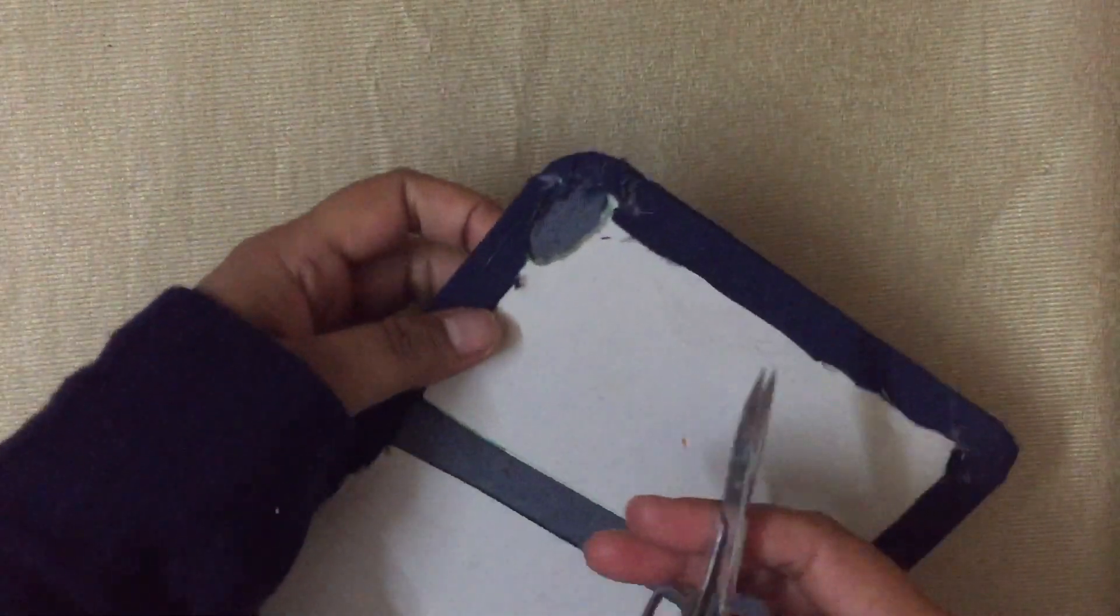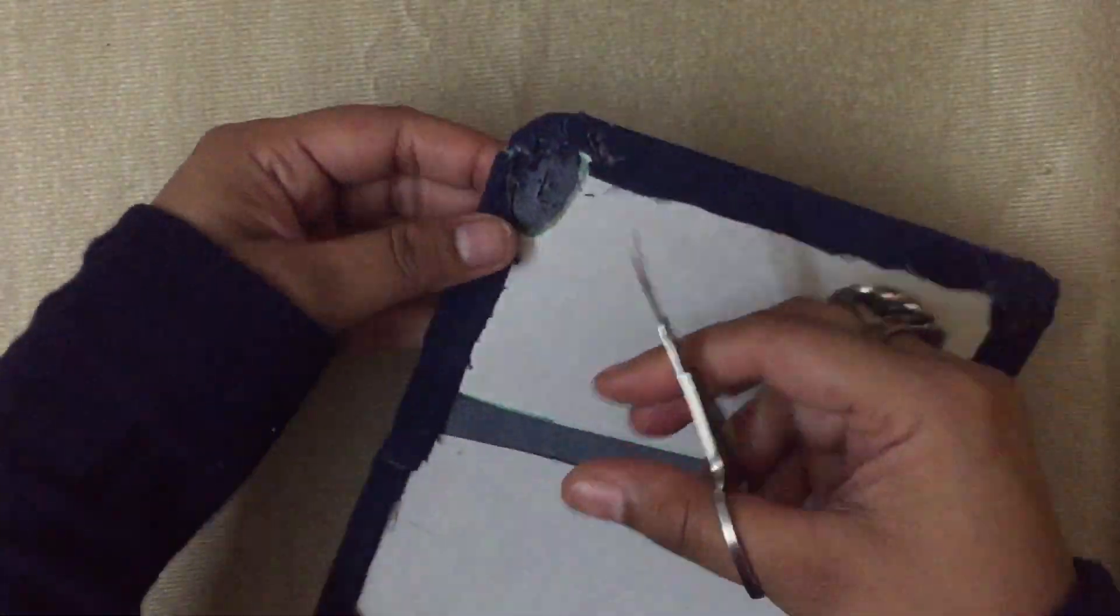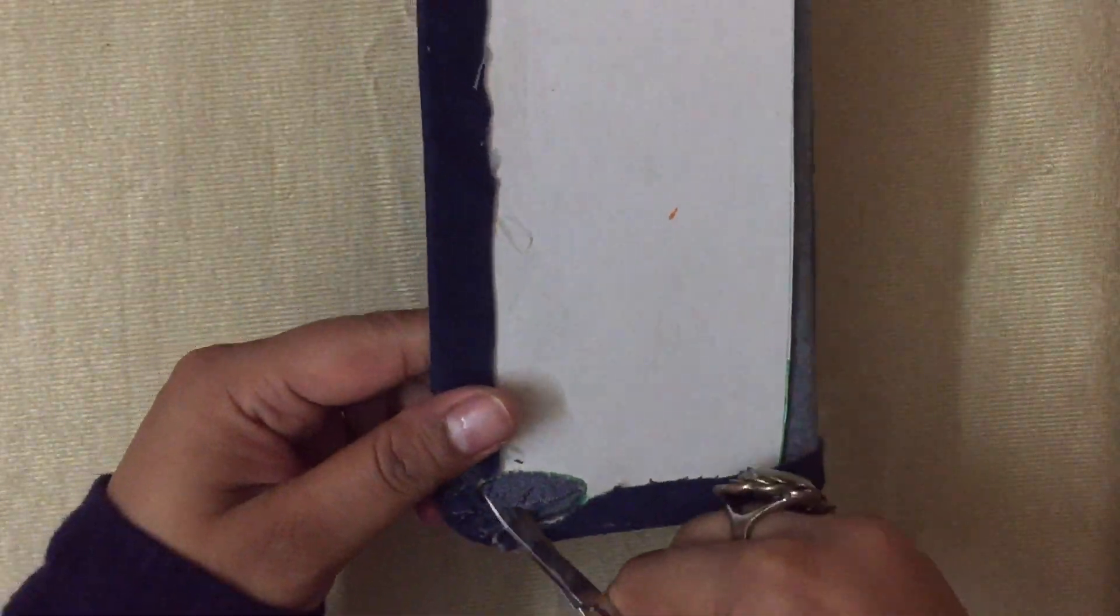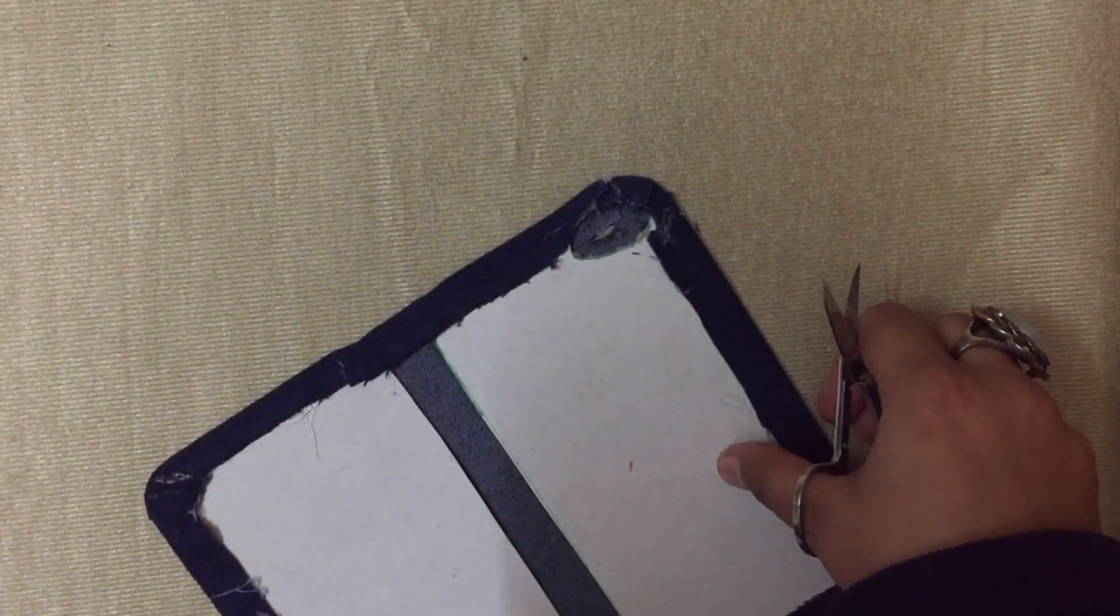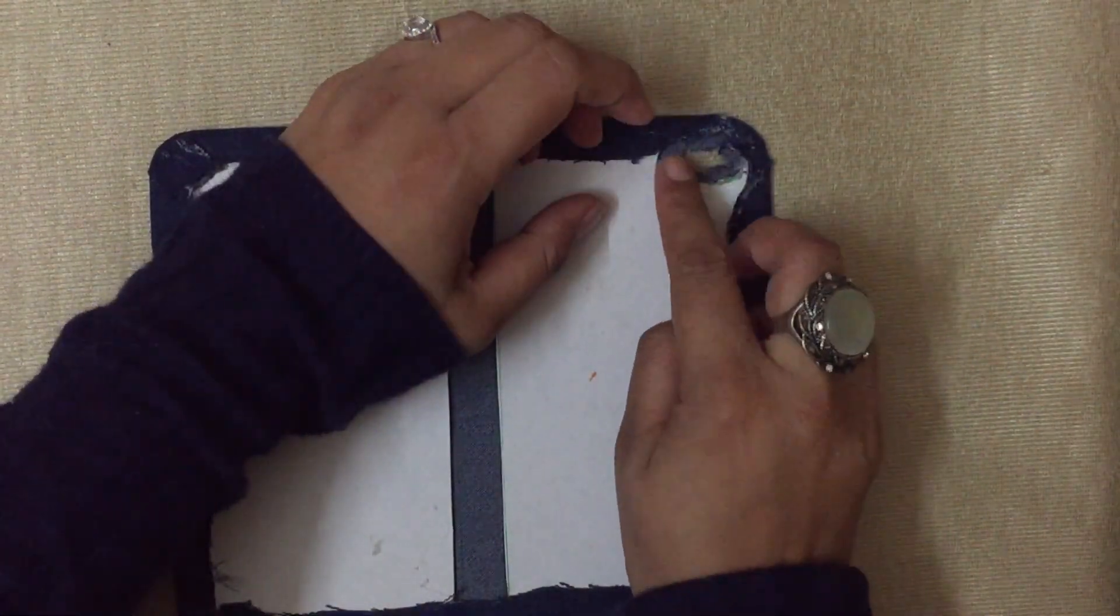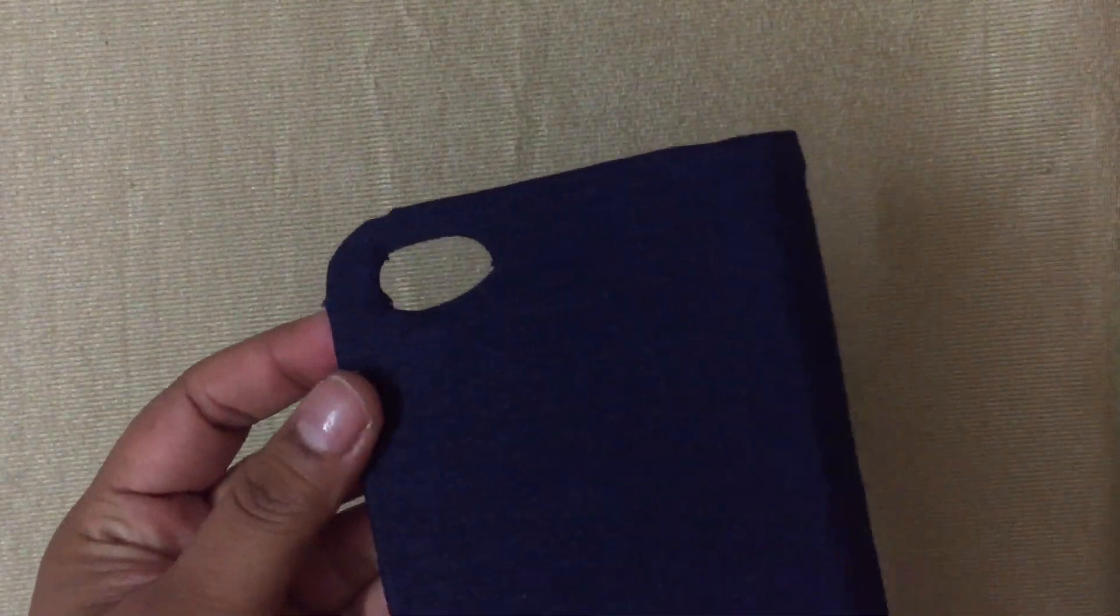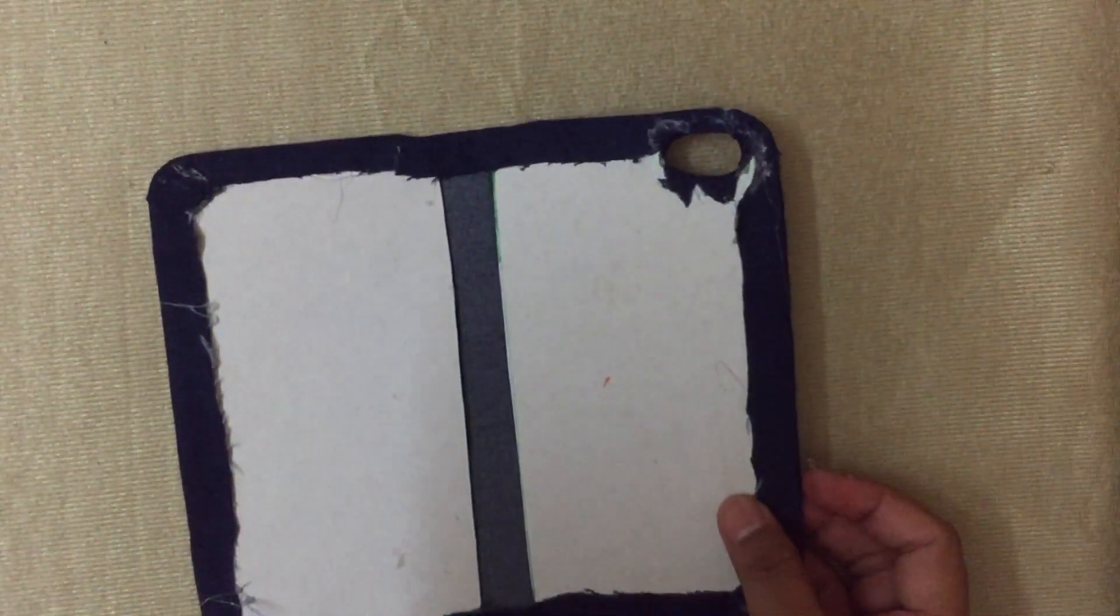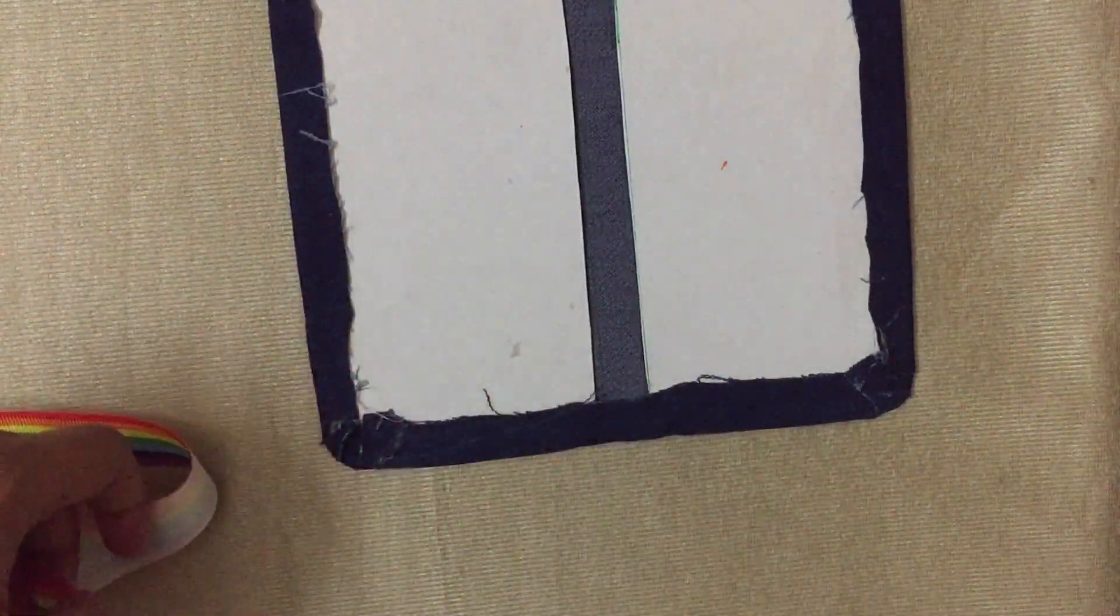Make a small slit in the fabric covering the camera slot like so. Glue over the excess fabric as shown. This is what it should look like. Next I'm taking a piece of decorative ribbon and gluing it to the cover.